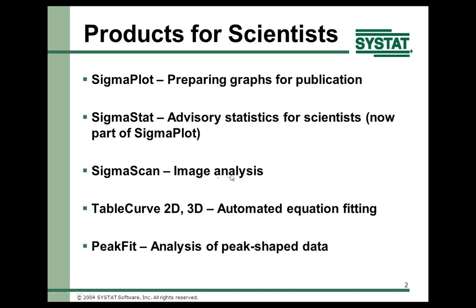SigmaScan analyzes images — for example, from a satellite photo you might look at different colors of green and yellow and get areas of crops below. TableCurve 2D and 3D are automated equation fitting: 2D fits over 4,000 equations to your data and ranks them by goodness of fit so you can find a good fitting function. PeakFit is for analysis of peak shape data, used by people with chromatographs and mass spectrometers.